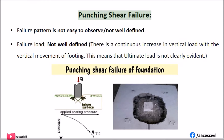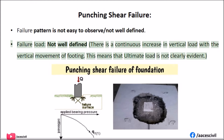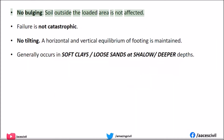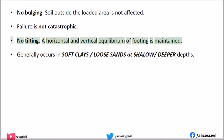Punching Shear Failure: The failure pattern is not easy to observe and not well defined. The failure load is not well defined; there is a continuous increase in vertical load with the vertical movement of the footing, meaning the ultimate load is not clearly evident. No bulging occurs — soil outside the loaded area is not affected. Failure is not catastrophic. No tilting — horizontal and vertical equilibrium of the footing is maintained. Generally occurs in soft clays and loose sands at shallow or deeper depths.